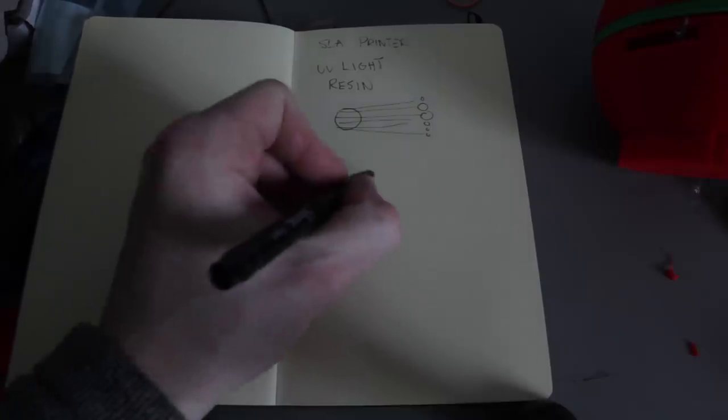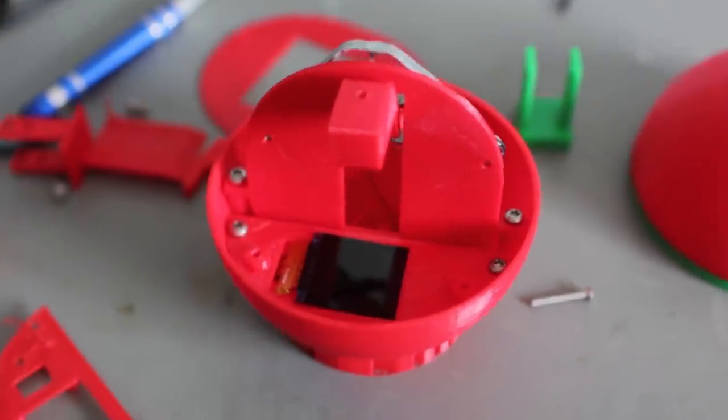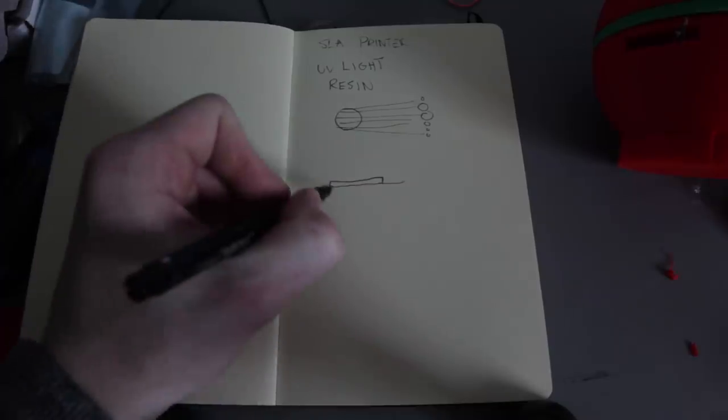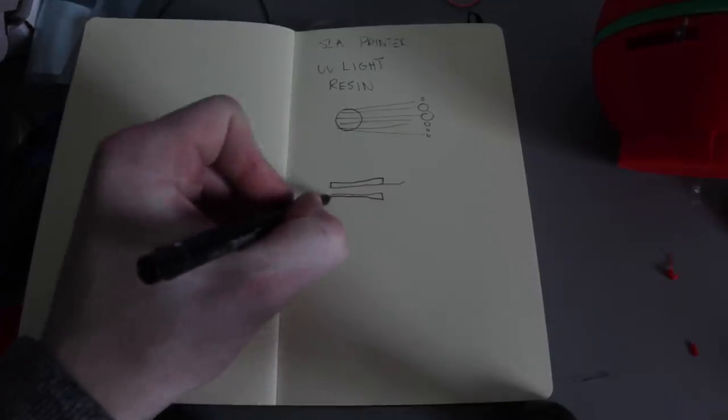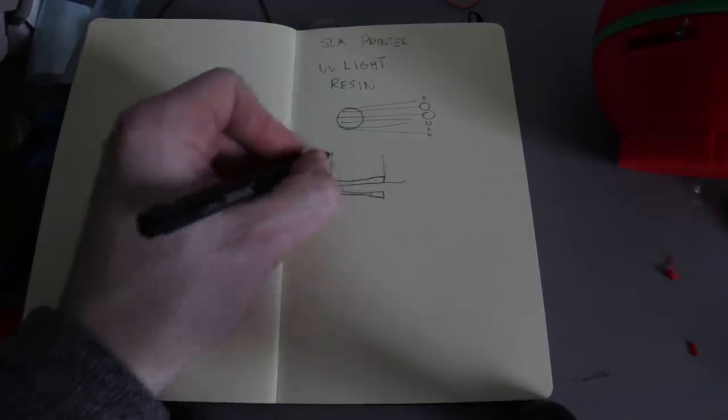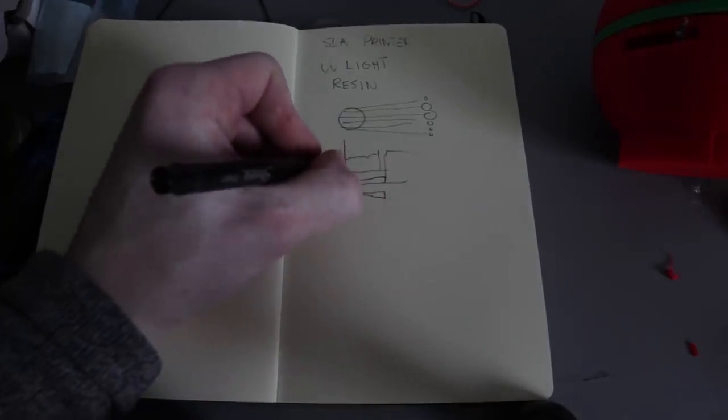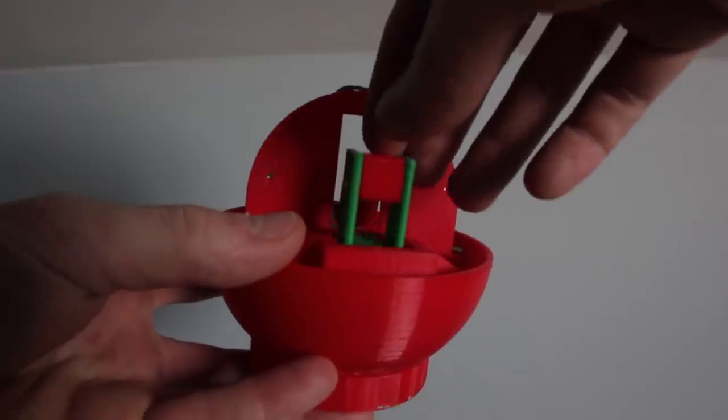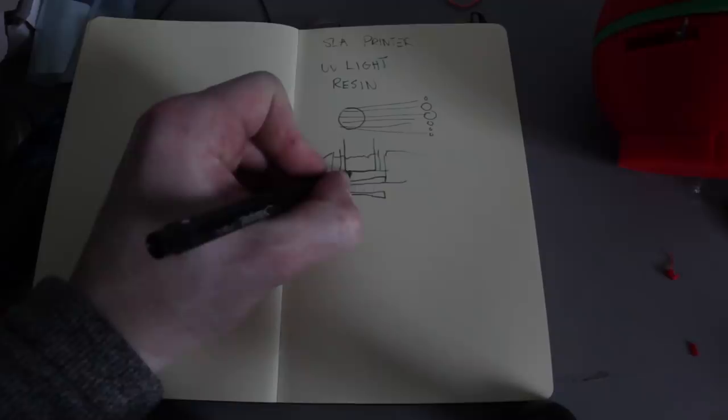So what this does is it takes that LCD, so that's the LCD screen, and then you take some UV lights underneath it that shine up through it into the liquid, and onto a platform. And where it prints is right here.